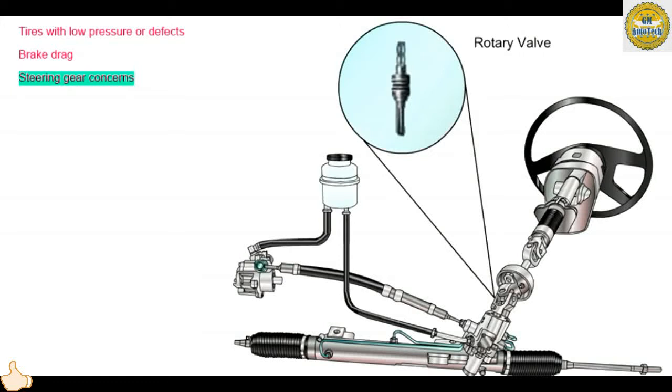A defective rotary valve in the power steering system could cause a drift or pull concern by constantly providing assist in only one direction.